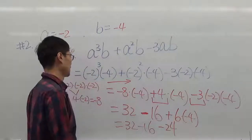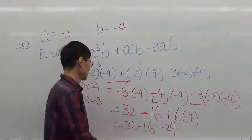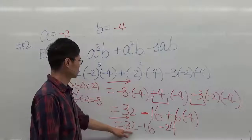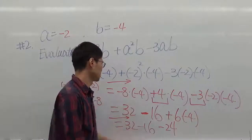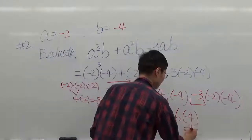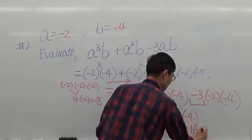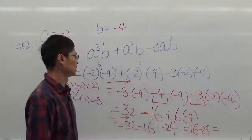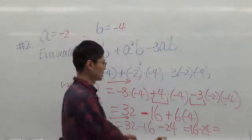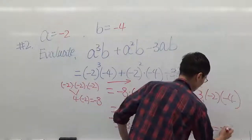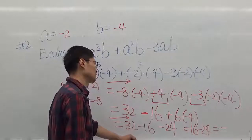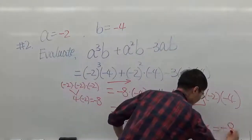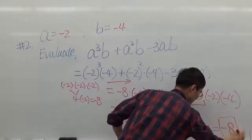Now we have subtraction only, so starting from left to right: 32 subtract 16 gives 16, then subtract 24. Since 16 is smaller than 24, we don't have enough, so the result will be negative. 24 minus 16 is 8, so the answer is negative 8. That's our final answer.